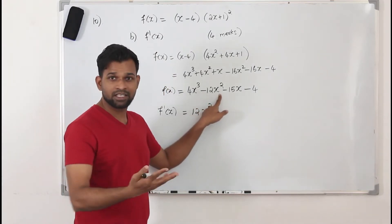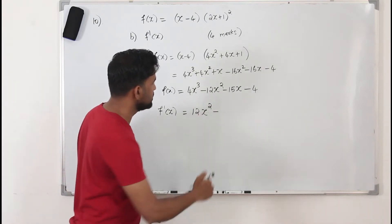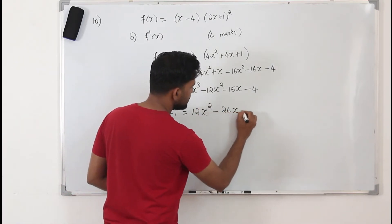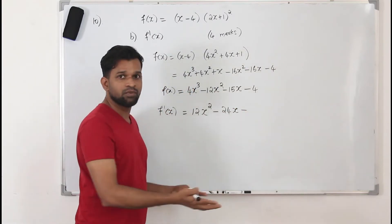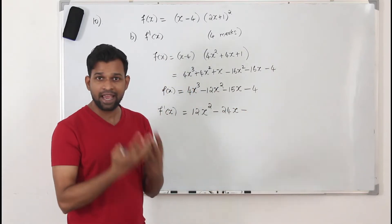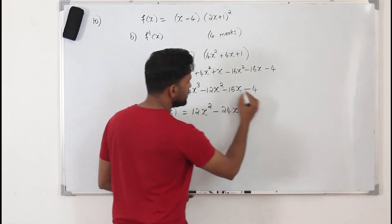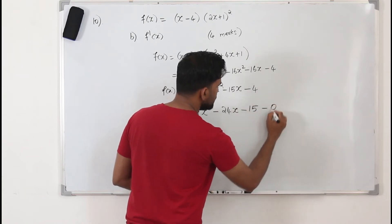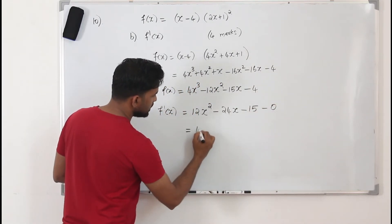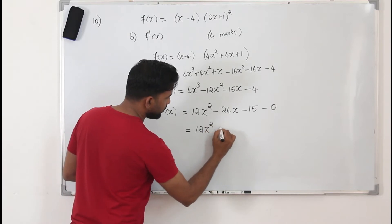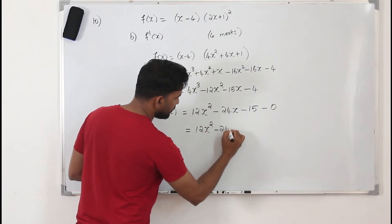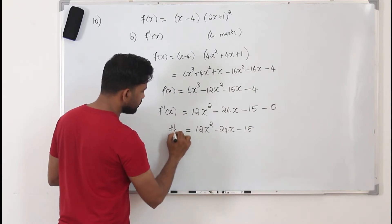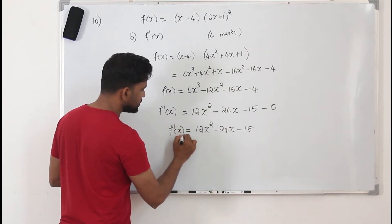Differentiating minus 15x gives minus 15, and the constant minus 4 becomes 0. So F'(x) is 12x² minus 24x minus 15.